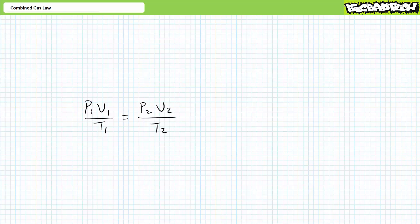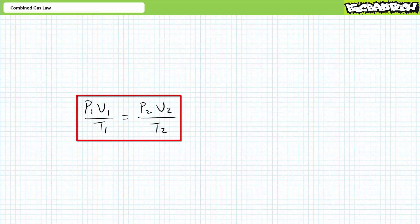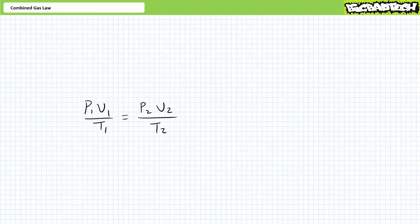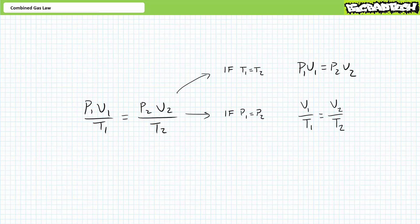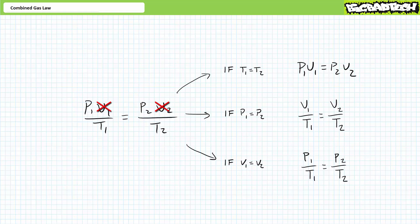Let's tie these three thought experiments together. We now have three relationships of pressure, volume, and temperature that can be summarized — or combined — into one combined gas law: P1 times V1 over T1 equals P2 times V2 over T2. Most analysis scenarios involve keeping one property constant, changing one property, and seeing how the third responds. If T1 equals T2, temperature can be removed from consideration, and the combined gas law simplifies to P1 times V1 equals P2 times V2 for constant temperature scenarios. Similarly, if P1 equals P2, pressure can be removed from consideration, so the combined gas law simplifies to V1 over T1 equals V2 over T2 for constant pressure scenarios. Lastly, if V1 equals V2, volume can be removed from consideration, so the combined gas law simplifies to P1 over T1 equals P2 over T2 for constant volume scenarios.